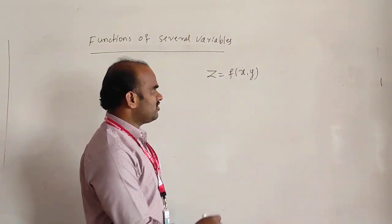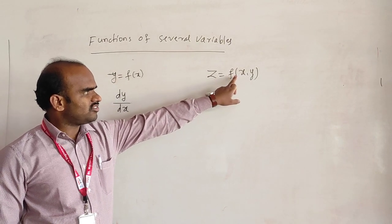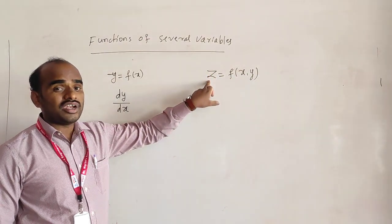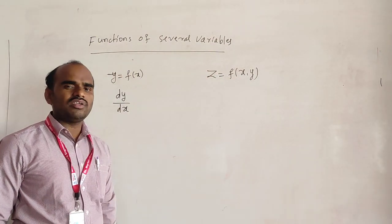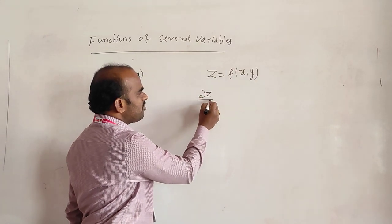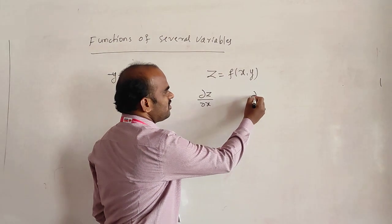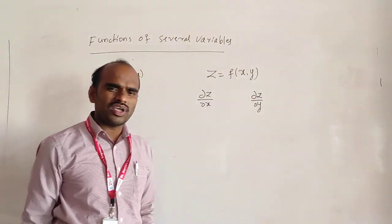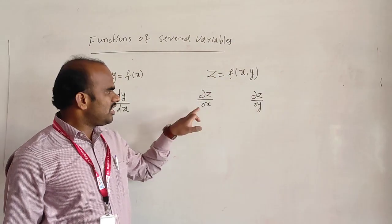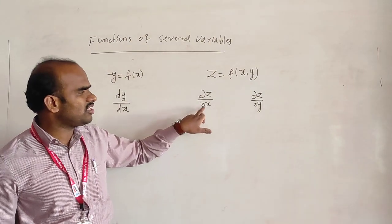In case of functions of two variables, the rate of change of the dependent variable will exist with respect to two independent variables. For z equal to f of x comma y, the rate of change of z with respect to x is denoted by ∂z/∂x, and with respect to y is denoted by ∂z/∂y. The symbol ∂ represents partial differentiation, because we are differentiating with respect to only one independent variable at a time — partially. That is why it is called partial differentiation.